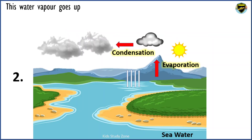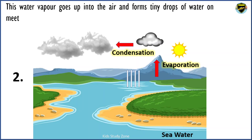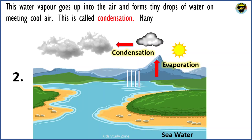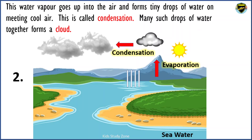This water vapour goes up into the air and forms tiny drops of water on meeting cool air. This is called condensation. Many such drops of water together form a cloud.